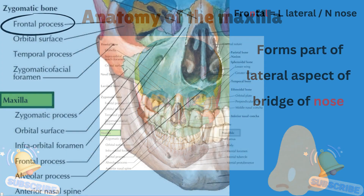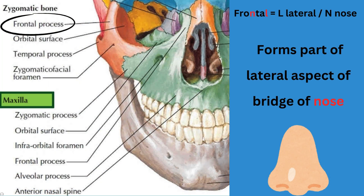We will go in order, starting with the frontal process, which forms part of the lateral aspect of the bridge of the nose. The way to remember it: the word 'frontal' ends in 'l' for lateral aspect, and it has an 'n' for nose — the lateral aspect of the nose.